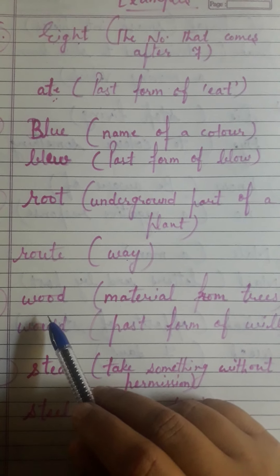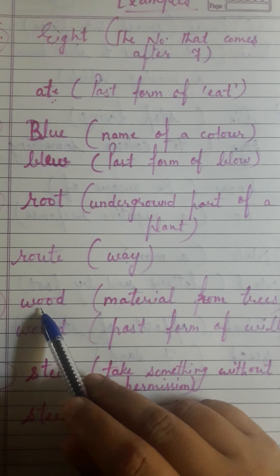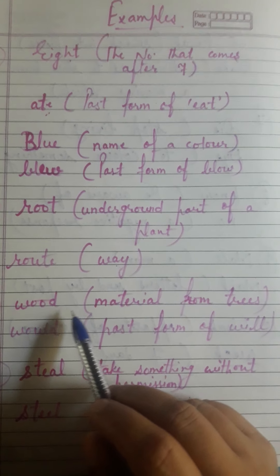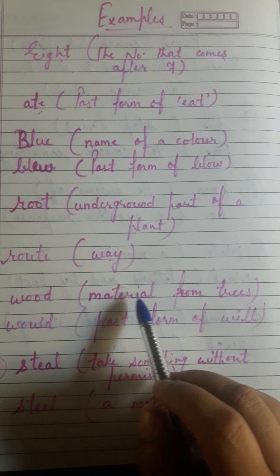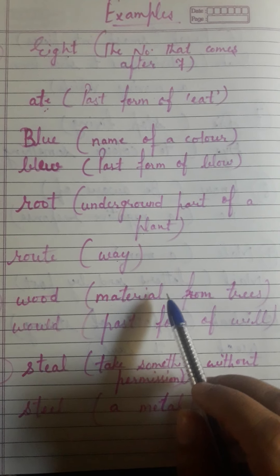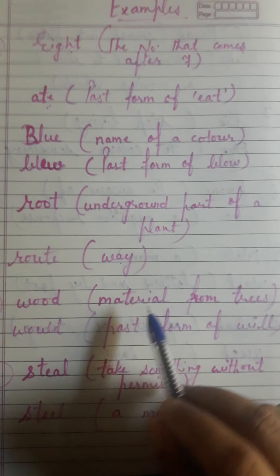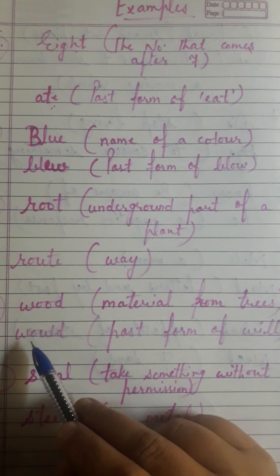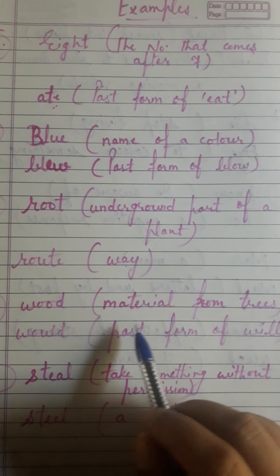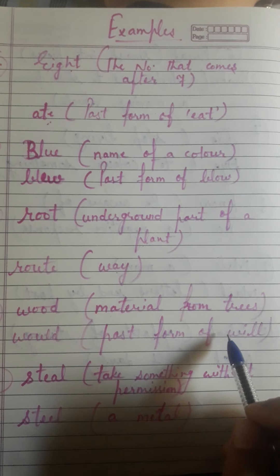Next is W-O-O-D, wood — it is material from trees, vo material jo hume trees se milta hai, means lakdi. And W-O-U-L-D, would — is the past form of will.